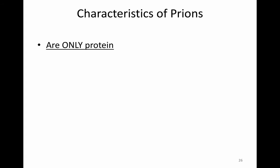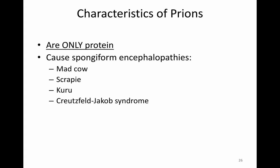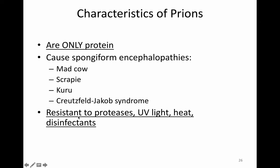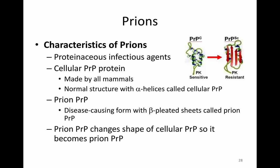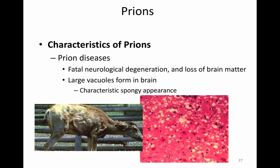Prions are the last acellular infectious agent, and these are protein only — infectious protein. They cause what are called spongiform encephalopathies, including mad cow disease, scrapie, Kuru, Creutzfeldt-Jakob syndrome, and chronic wasting disease in deer. These proteins are resistant to proteases — the enzyme that breaks down protein — as well as UV light, heat, and disinfectants. They can only be destroyed by incineration or autoclaving in sodium hydroxide, making them the most resistant form of microbe. They cause fatal neurological degenerative diseases resulting in a loss of brain matter. Shown here is a cross-section of a brain with large vacuoles formed, causing the spongy appearance — the spongiform encephalopathy.